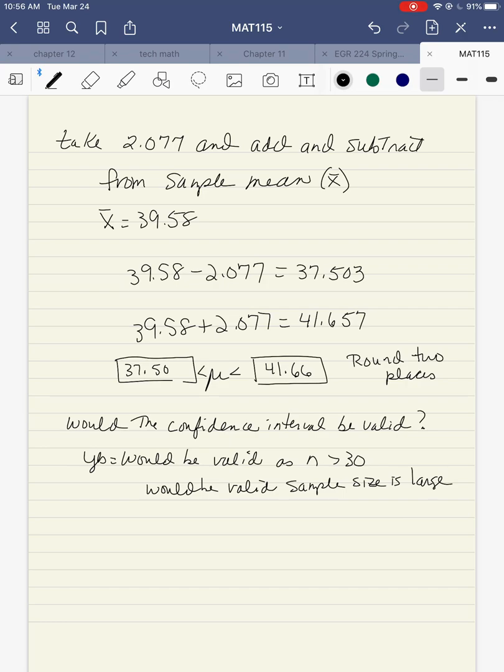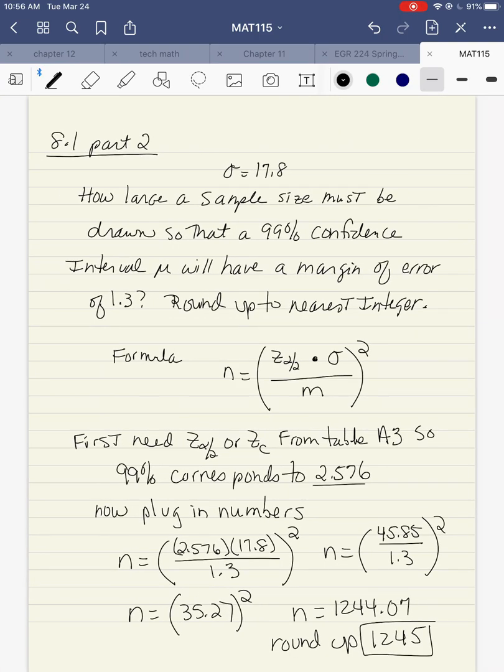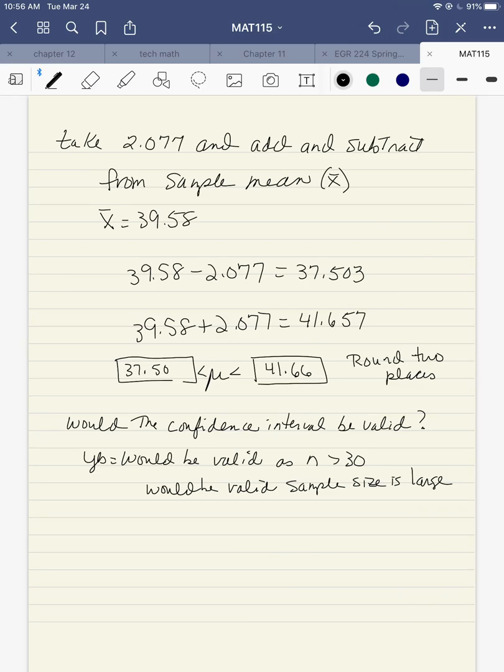Would the confidence interval be valid? Yes. So what this question is asking is, if your sample size is larger than 30, yes, it is going to be valid. So if they give you the population mean, it would also be valid. But this particular problem gave a sample mean, but since the sample size is larger than 30, it's still valid. All right, I'm going to stop there and do another one.